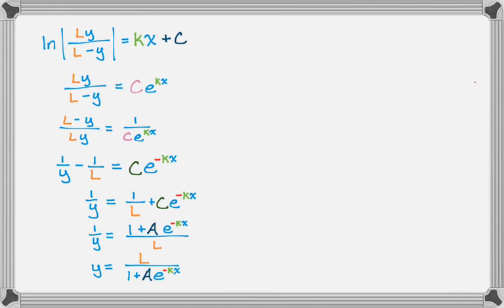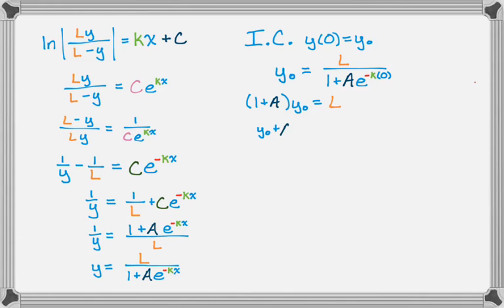So y is equal to L over 1 plus Ae to the negative kx. Now what I want to do is I'm going to use the initial condition, so let's suppose the initial condition is y of 0 is equal to y sub 0, and I'm just going to plug in and solve for A. So y sub 0 is L over 1 plus Ae to the negative k times 0, but that's just 1, so we can solve this. Cross multiplying, then distributing, and then finally solving for A.